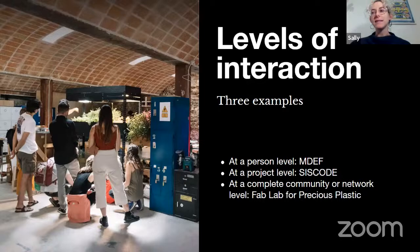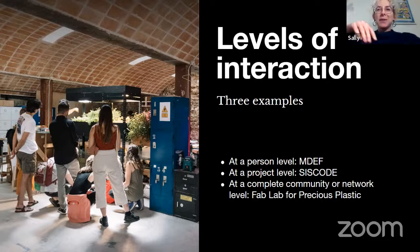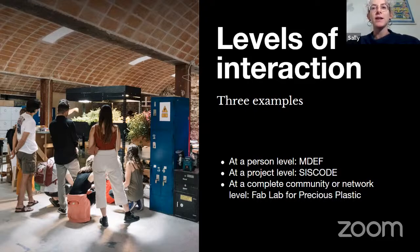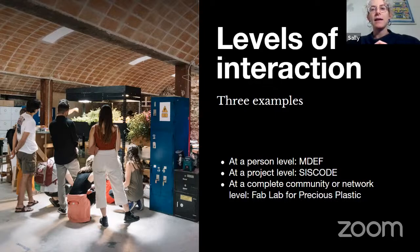The three examples I'll be going through are interventions at different scales. The first is at a person level, and that example will come from our Master's in Design for Emergent Futures and the work our students are doing there. The next example will be at a neighborhood or community level, with the project CISCODE. And the last will be at a community or network level, talking about FabLabs and Precious Plastic.